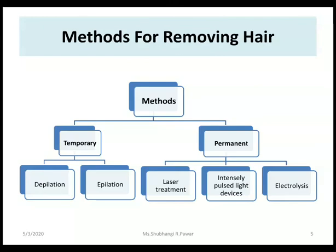The main topic is the methods for removing hair — this is generally asked in exams. There are mainly two types of methods: the temporary method and the permanent method. The temporary method is further classified into two types: depilation and epilation. The permanent method is further classified into three types: laser treatment, intensely pulsed light devices, and electrolysis. In today's lecture, we will concentrate on the temporary methods — that is, depilation and epilation.